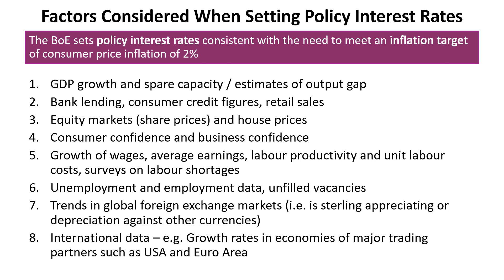What does the Bank of England Monetary Policy Committee consider when setting policy interest rates? They set the rate consistent with meeting the inflation target of CPI at 2 percent, holding a two-day meeting early each month. They consider spare capacity, output gaps, retail sales, share prices, market prices, unemployment, productivity, labour shortage surveys, unemployment data, global conditions, exchange markets, and trading partners — a huge amount to consider, and much of it is forecast-based, which is why it takes a day and a half.